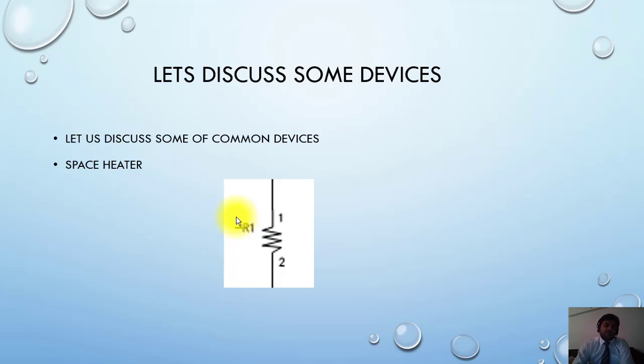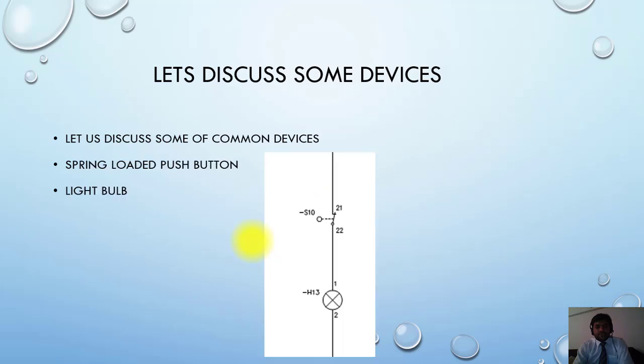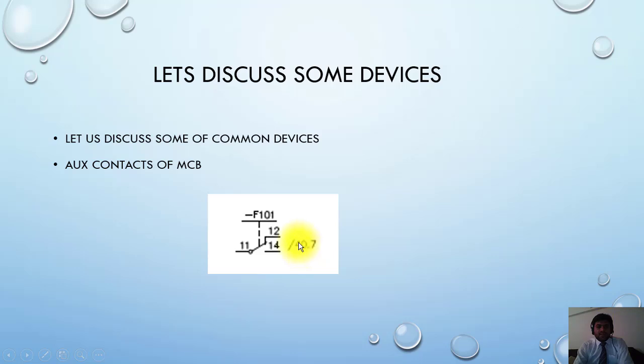Next is another symbol. This is the light symbol. H13 is normally used - H is normally used for the bulb. This S10 is a spring-loaded switch. It will only close when the door is open. So this is another symbol that you can understand.